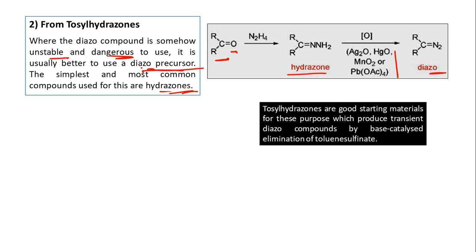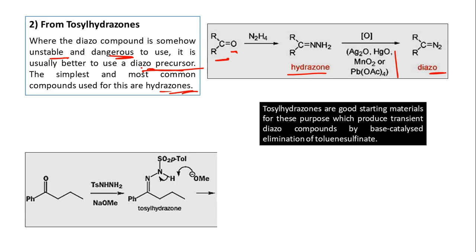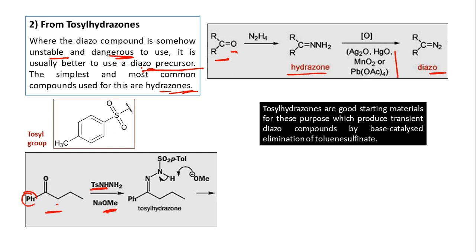Tosyl hydrazone is a good starting material because transient diazo compounds can be obtained by base-catalyzed elimination of toluene sulfonate. The tosyl (TS) group has a benzene ring with a CH₃ group at one position and an SO₂ group at the para position — i.e., para-toluene sulfonyl. In tosyl hydrazine (TS-NH-NH₂), one hydrogen of hydrazine is replaced by the TS group.